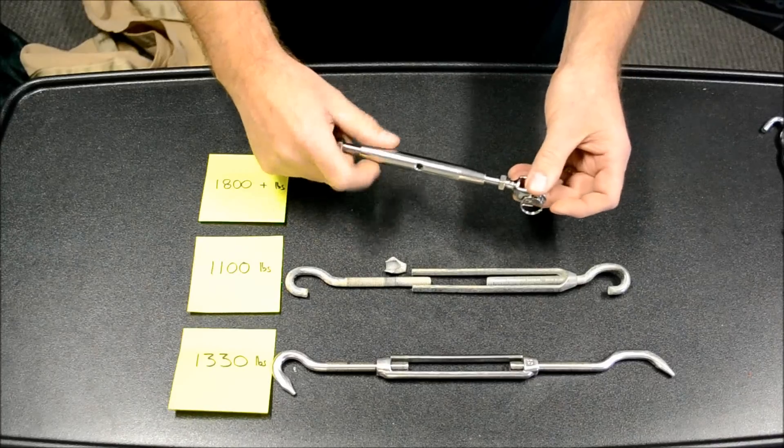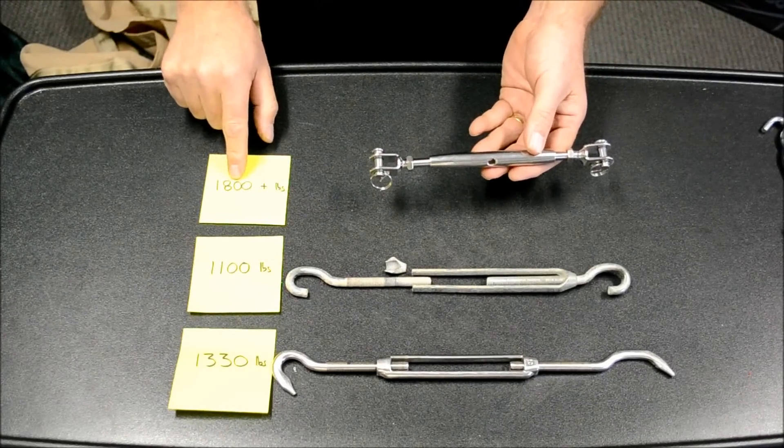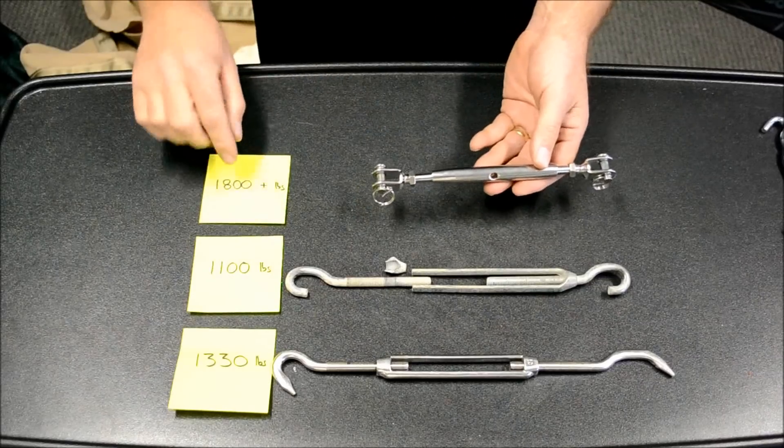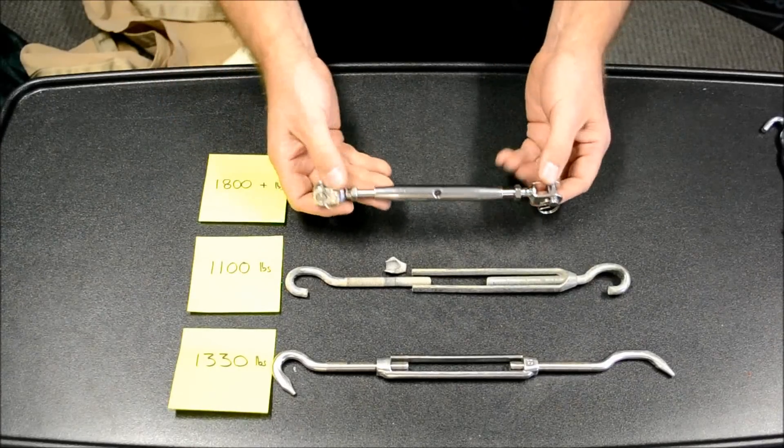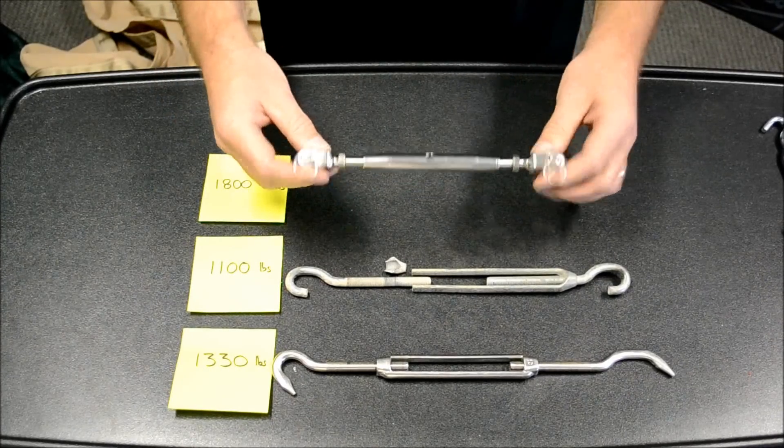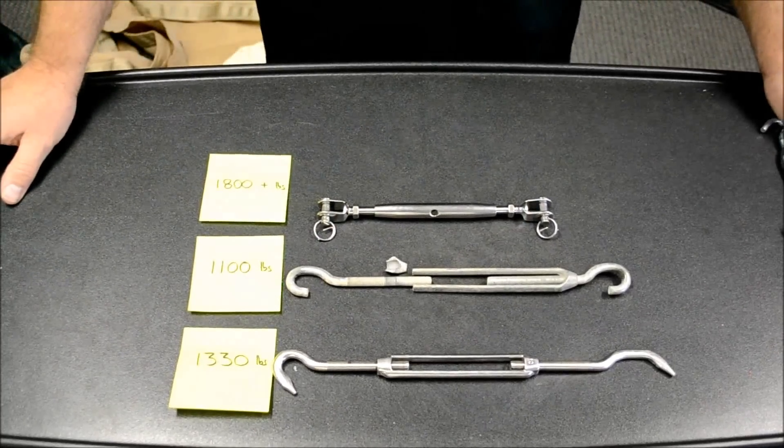And then our Shazeebo turnbuckle, same size, it's totally fine. We ran it up to 1,800 pounds. It didn't break. The reason we didn't go higher is because our dynamometer only goes to 2,000 pounds. But you can rest assured this turnbuckle can withstand all the forces that your Shazeebo is going to put on it.